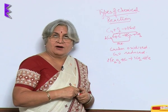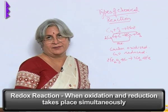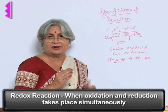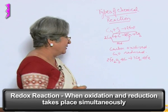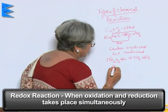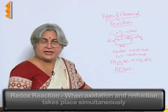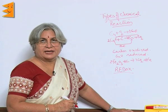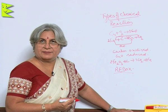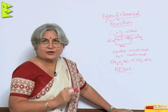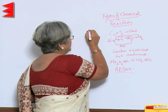Oxidation and reduction go hand in hand — they happen simultaneously. When oxidation and reduction occur together, the reaction is called a redox reaction. So the fifth type of reaction is the redox reaction.